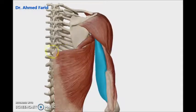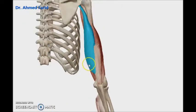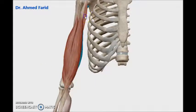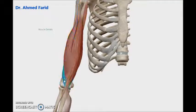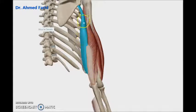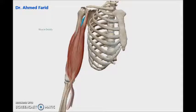To summarize: we have three muscles anteriorly — coracobrachialis, biceps, and brachialis. Coracobrachialis acts only on the shoulder joint. Biceps acts on both the shoulder and elbow joints. Brachialis acts only on the elbow joint. Posteriorly, triceps acts on the elbow joint as an extensor, but its long head also acts on the shoulder joint as an extensor. And here we finish the arm region regarding origin, insertion, and actions of the muscles. I hope you enjoyed this video — goodbye until we meet again in the next video.